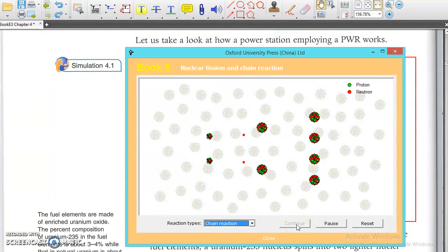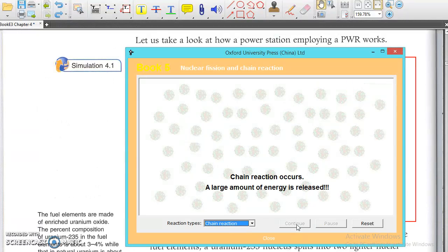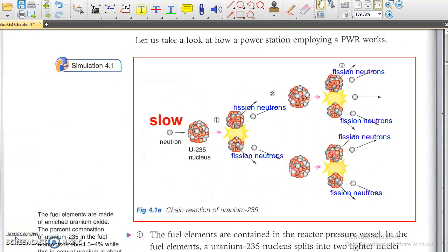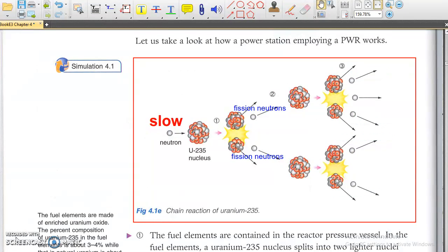When the uranium absorbs a slow neutron, it produces fission neutrons, which further trigger the fission of other uranium nuclei. Fission neutrons are fast. Water is used as moderator, which slows down the neutrons to become slow neutrons.